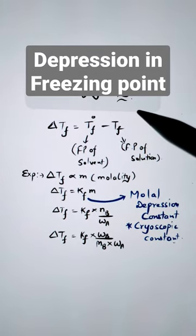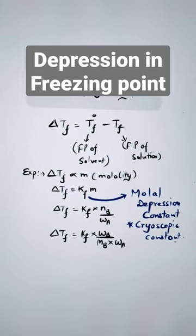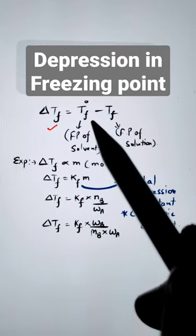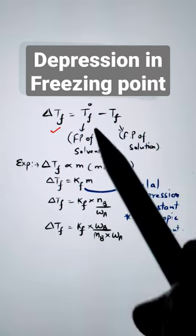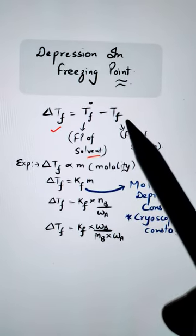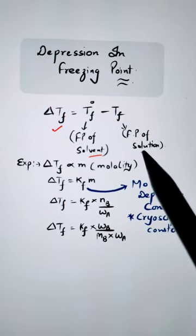Now let's discuss this colligative property: depression in the freezing point. We know that delta Tf is equal to T0f minus Tf, where T0f is the freezing point of solvent and Tf is the freezing point of solution.